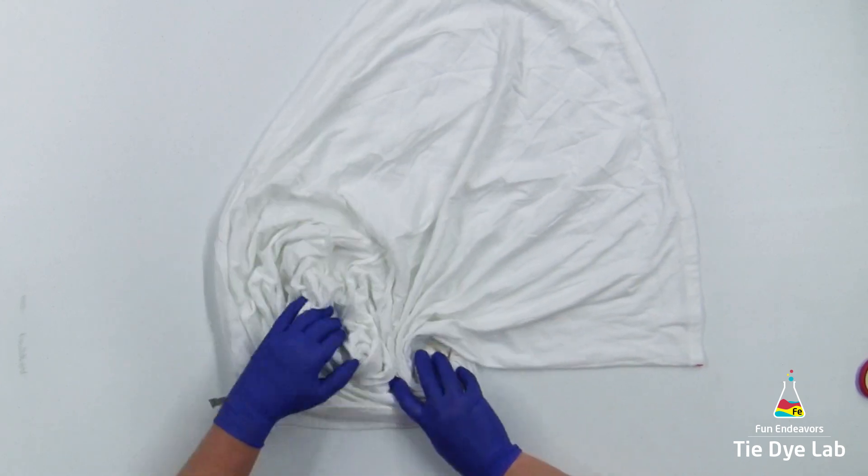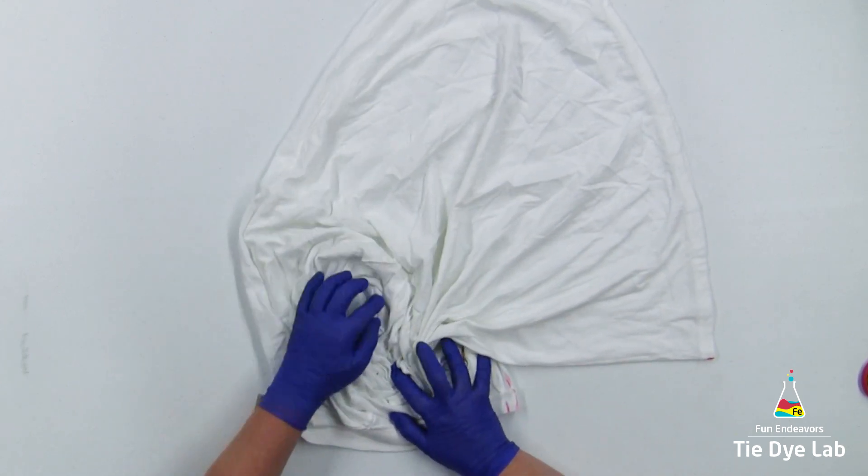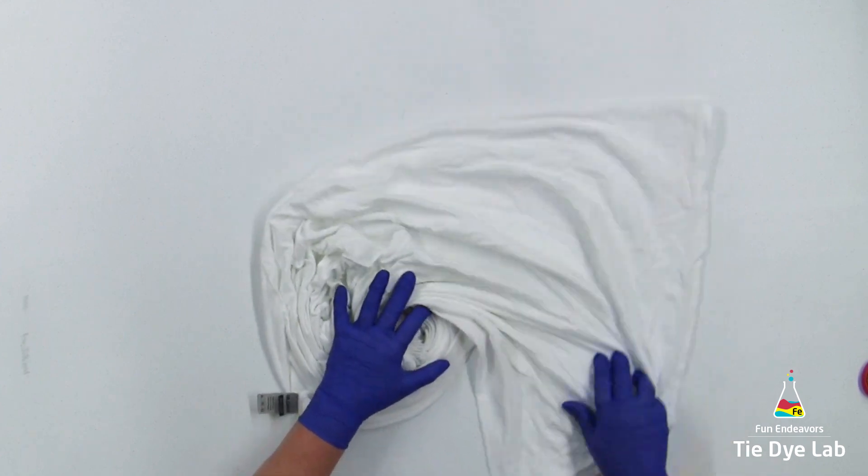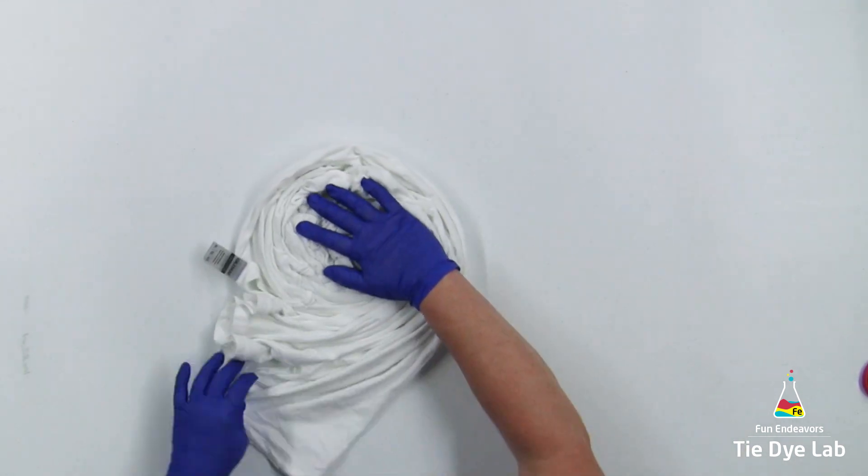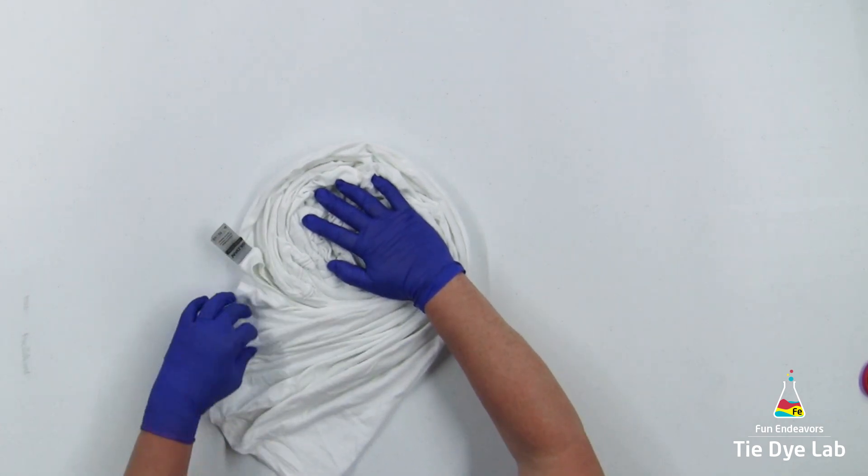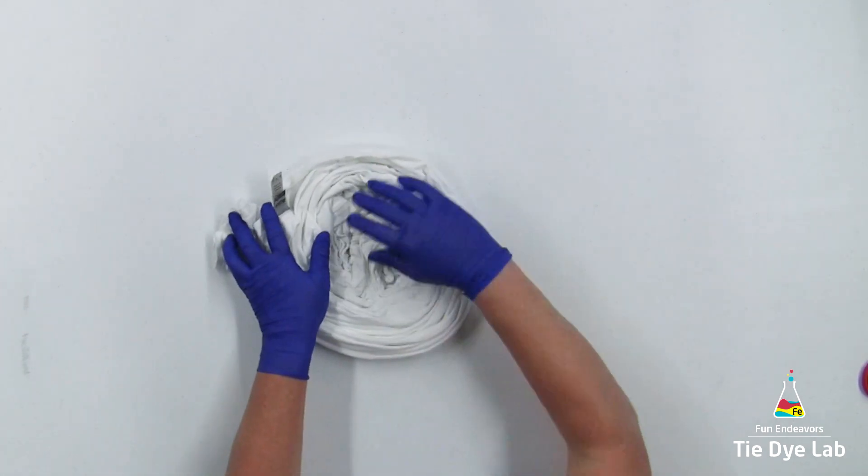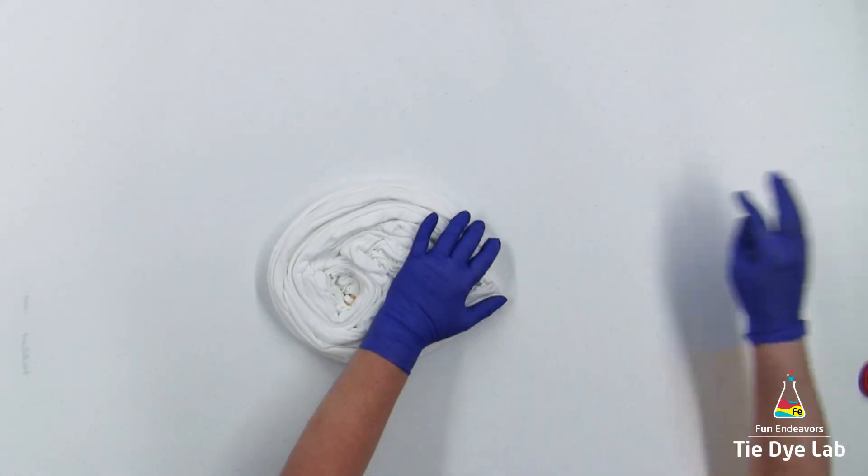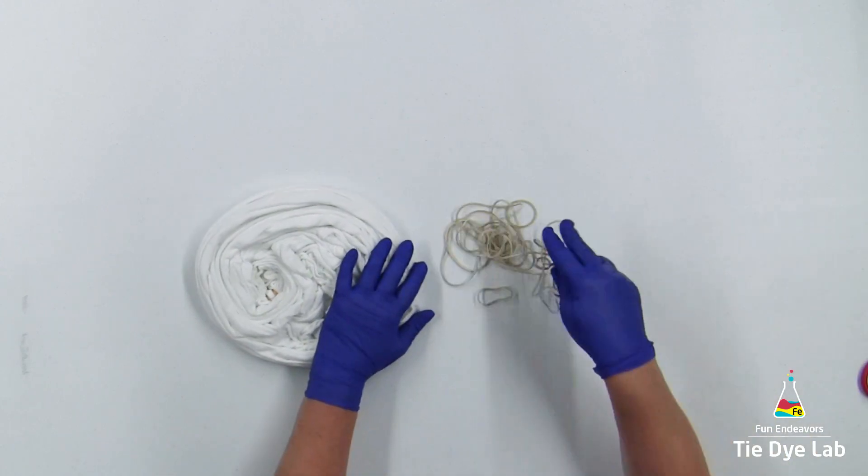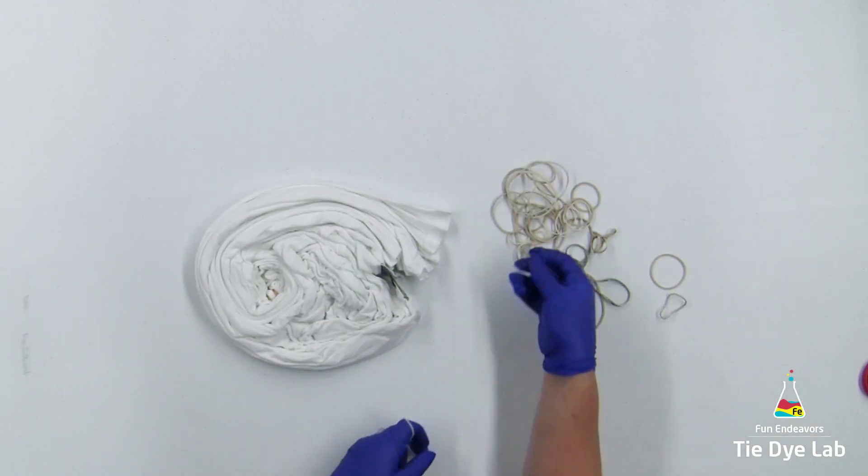Then grabbing the heart portion of the shirt, I'm going to begin to spiral the shirt, forming some additional folds in the shirt as I go along. Then I'm going to hold the folds in place with some rubber bands.